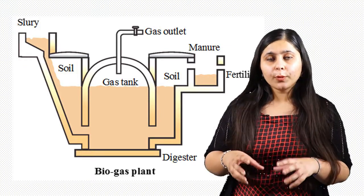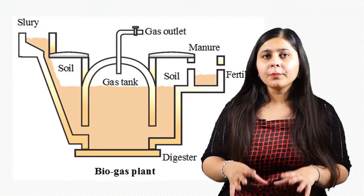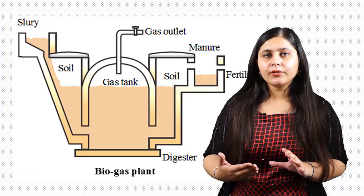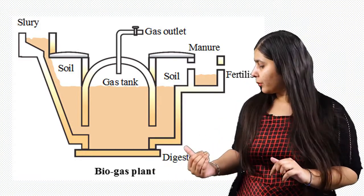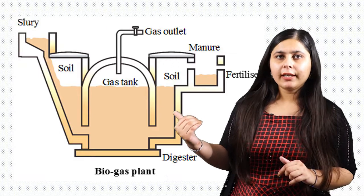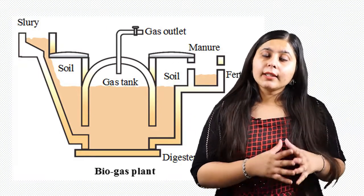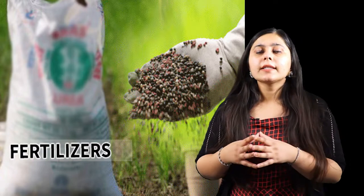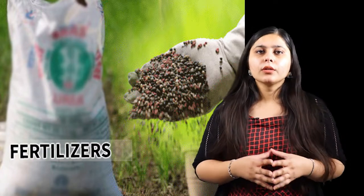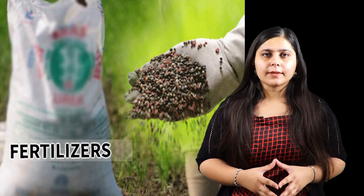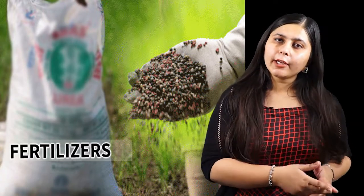There is a lid to obtain the biogas that is formed. Because gases apply pressure, the byproduct slurry that is left moves out from the outlet pipe and reaches the outlet tank. This slurry is also not wasted — it is used as manure and as fertilizer in the fields.